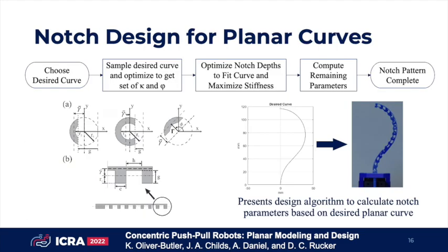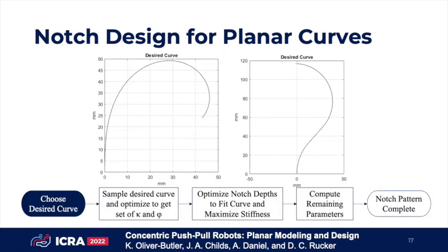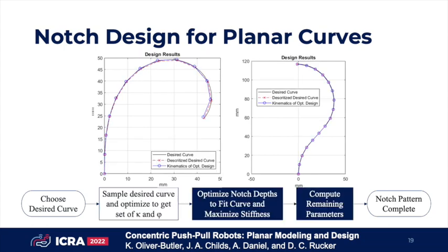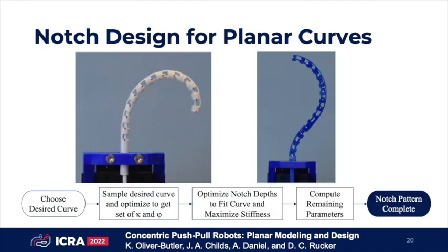Inspired by the capabilities of the push-pull paradigm, we developed a design algorithm that can generate a notch pattern for a robot based on a desired curve. Our algorithm first begins with a user designing a desired curve for the robot to take. The curve is then sampled to attain a set of desired curvatures and notch parameters. The notch depths are then optimized to fit the curve while maximizing the robot stiffness, while also computing the remaining notch parameters. The optimized notch pattern can then be fabricated and tested.